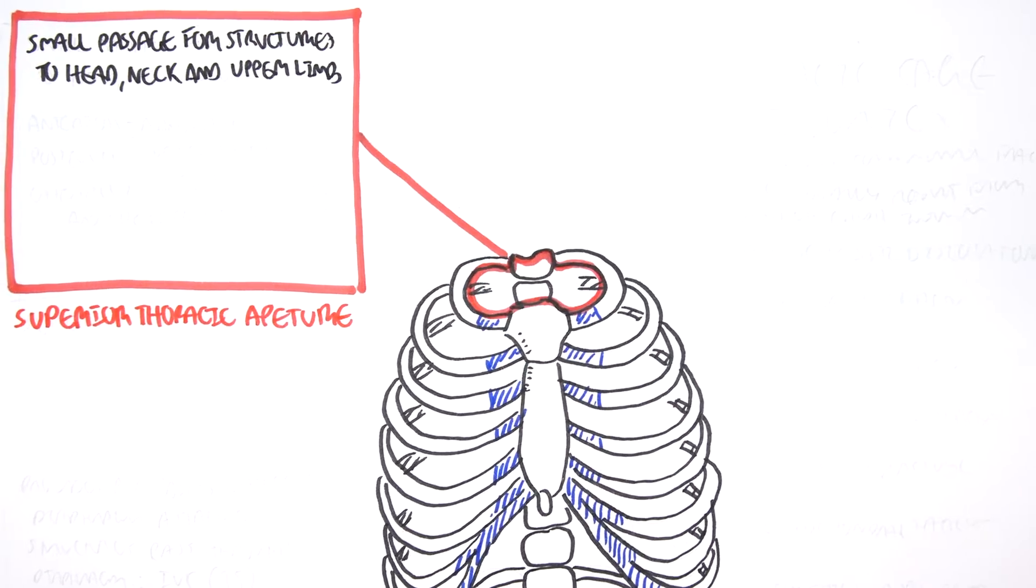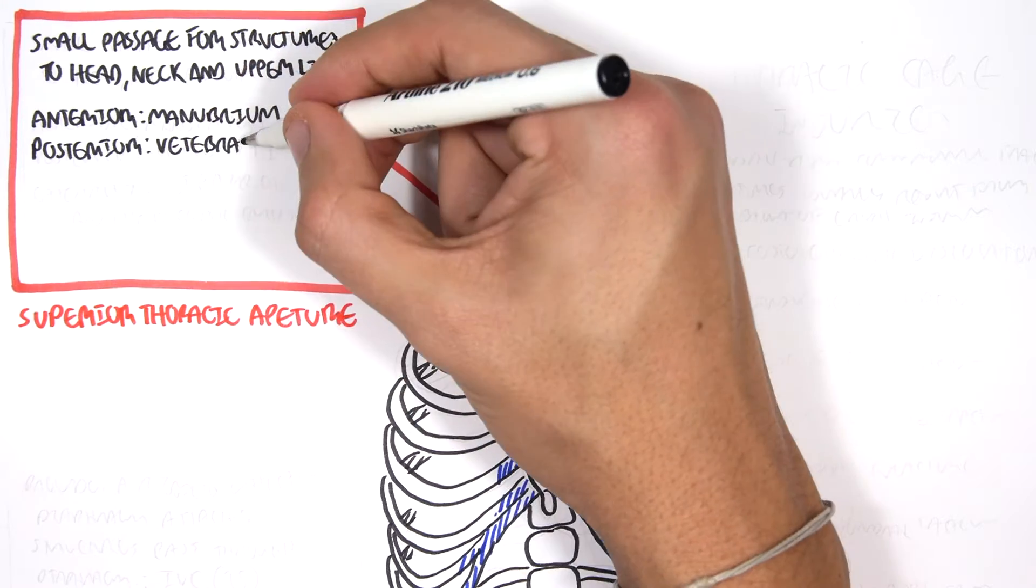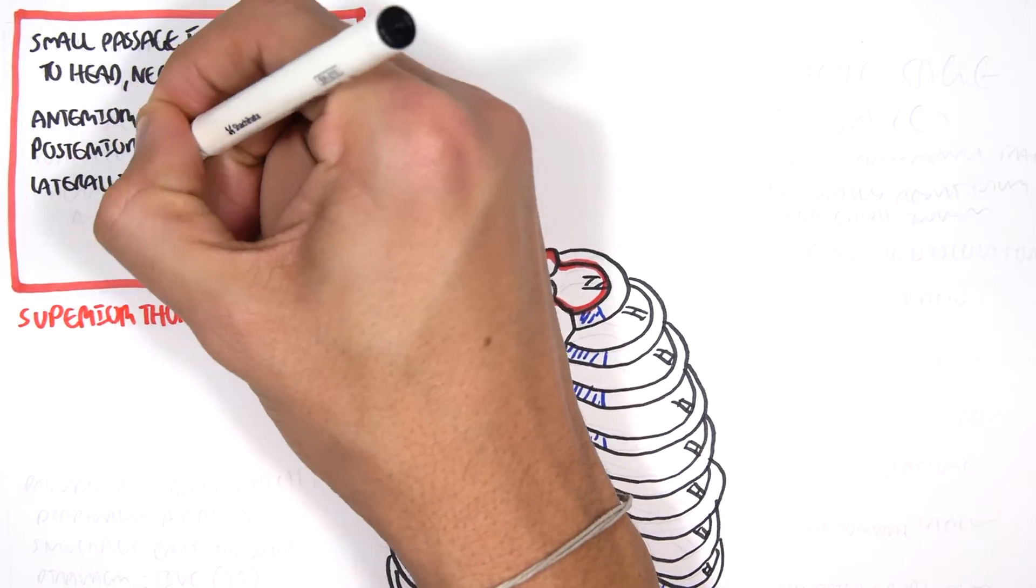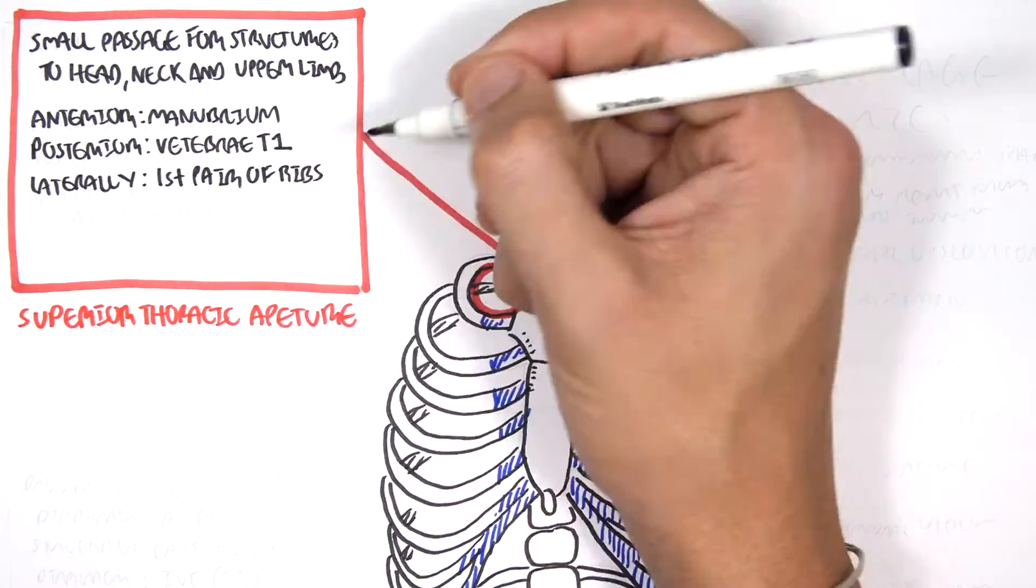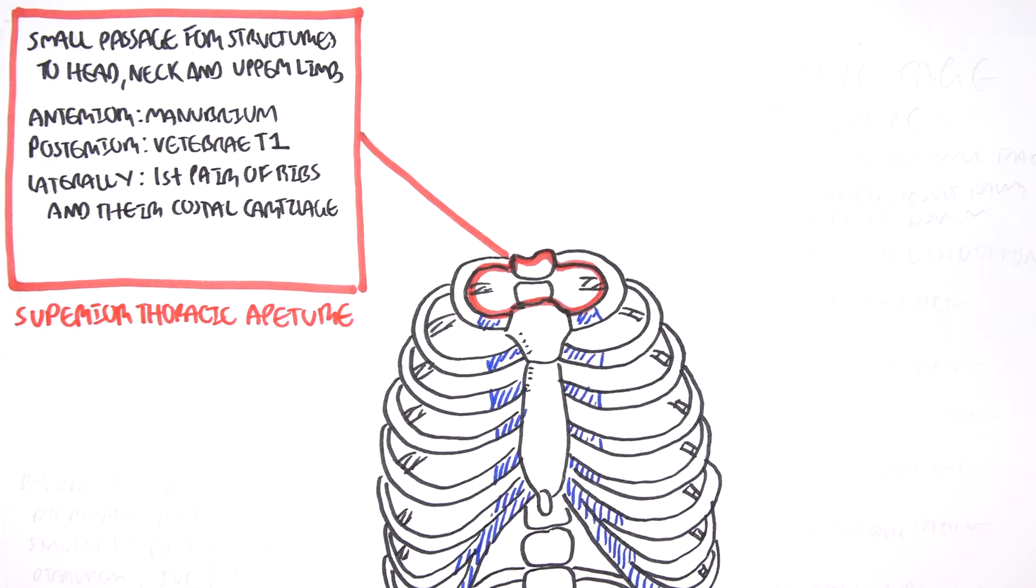The boundaries of the superior thoracic aperture is anteriorly the manubrium, posteriorly the vertebra T1, laterally the first pair of ribs, and their costal cartilages.